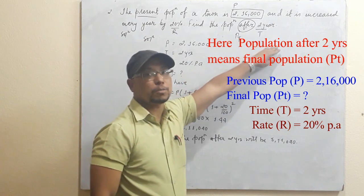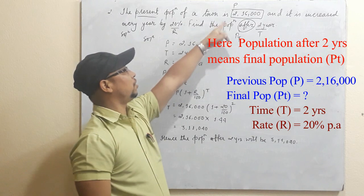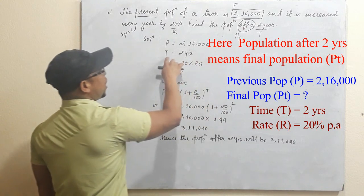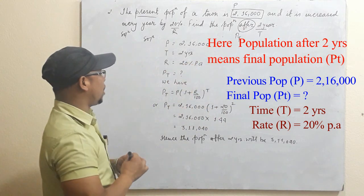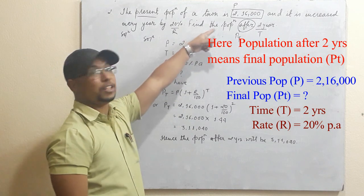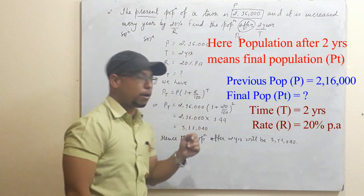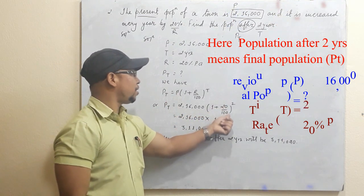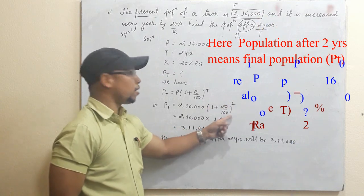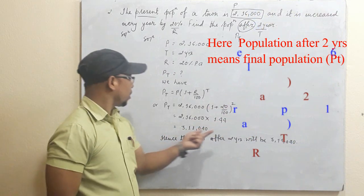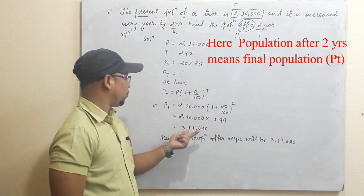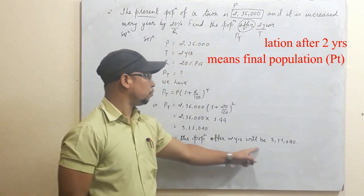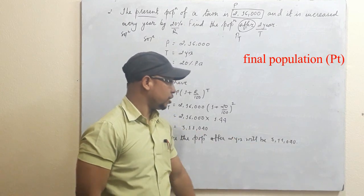Future means it is the final population, so this is PT. The present population is P. So P equals two lakhs sixteen thousand, T equals two years, and rate is twenty percent. Since it is increasing, the formula is PT equals P times (1 + R/100) to the power T. Substituting, PT equals 2,16,000 times (1 + 20/100) squared, which gives 2,16,000 times 1.44 equals three lakhs eleven thousand and forty.